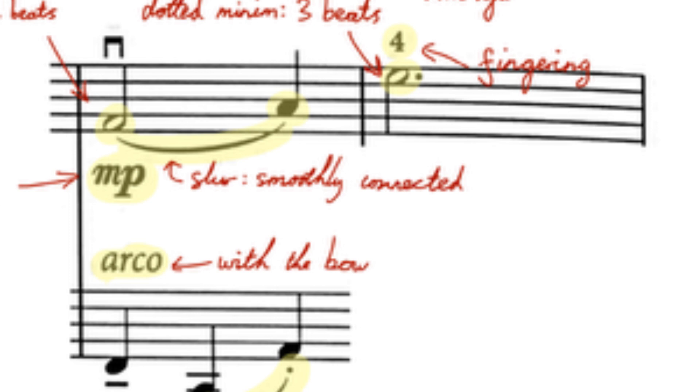A curved line connecting different notes is a slur, meaning to play the notes smoothly connected. On the violin, we do this by playing the notes in one continuous bow.